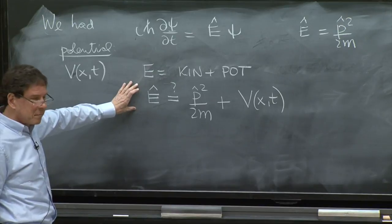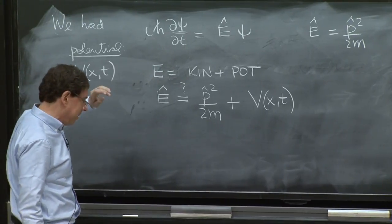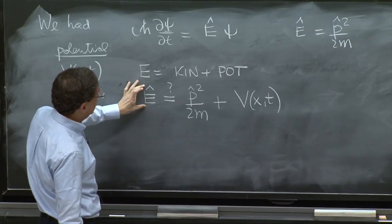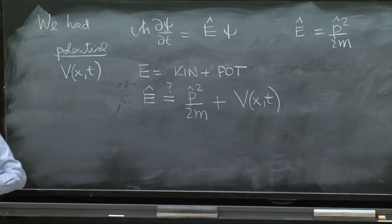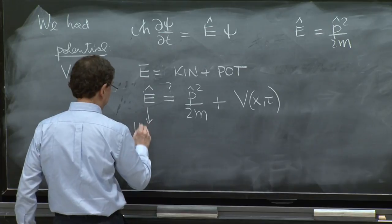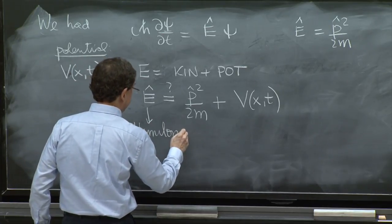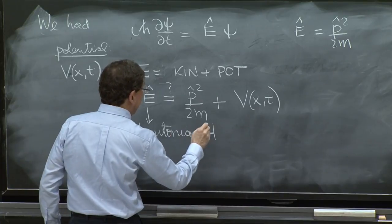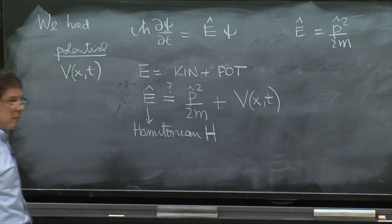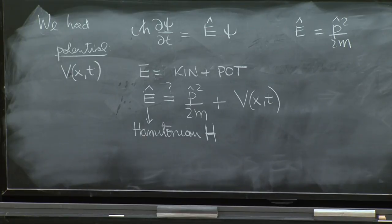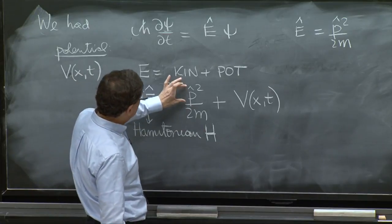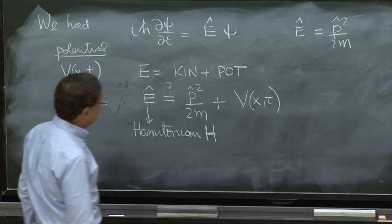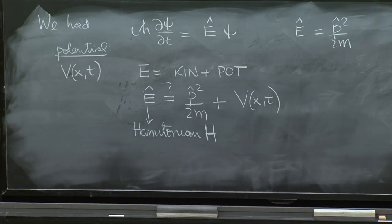Now, most people, instead of calling this the energy operator, which is a good name, have decided to call this the Hamiltonian. So that's the most popular name for this thing. This is called the Hamiltonian H. And in classical mechanics, the Hamiltonian represents the energy expressed in terms of position and momenta. That's what the Hamiltonian is. And that's roughly what we have here. The energy is expressed in terms of momenta and position.